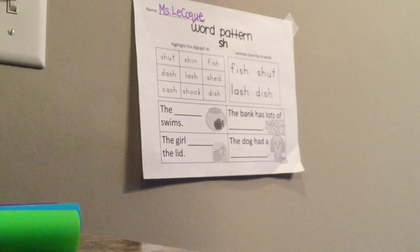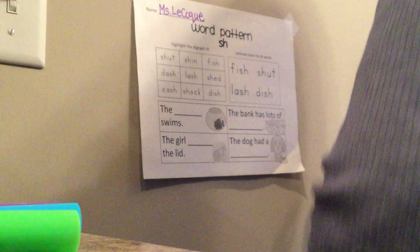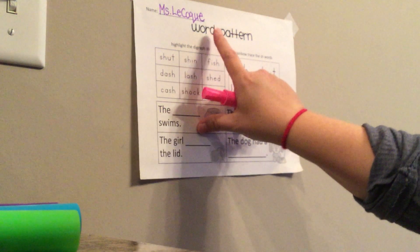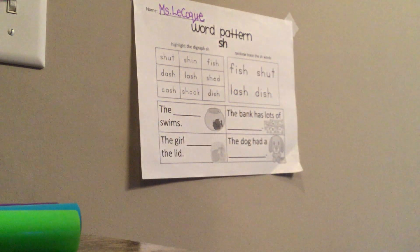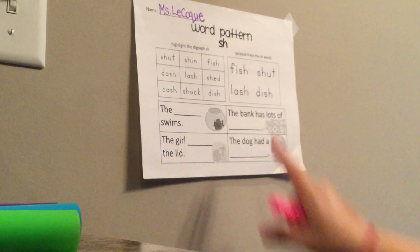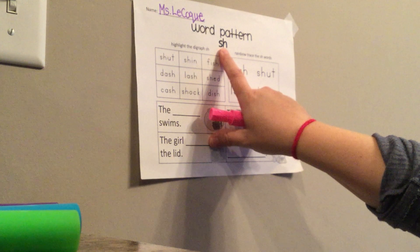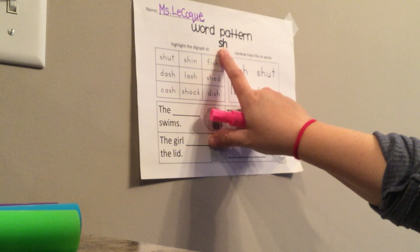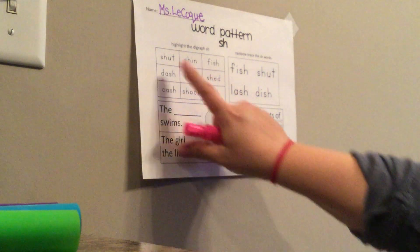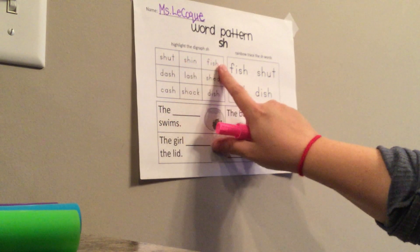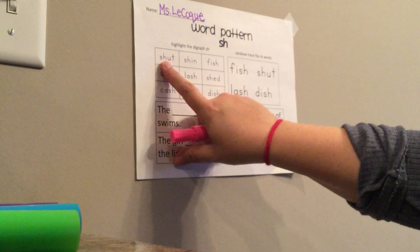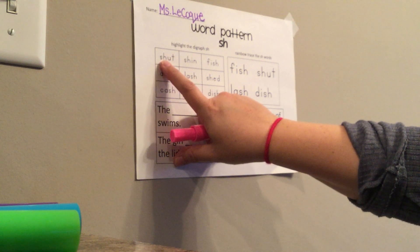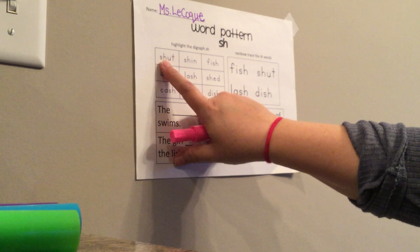Hey boys and girls, here's the activity for today. You're going to see that it says word pattern, and the pattern is 'sh' — just like Shane, he likes things very quiet. So let's say the 'sh' again together: shh. Now I want you to take a look at this top row of words. This says to highlight the digraph 'sh'. A digraph just means two letters that go together and they say one sound.